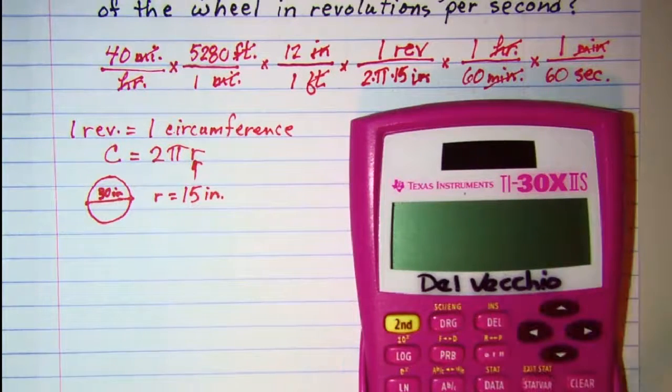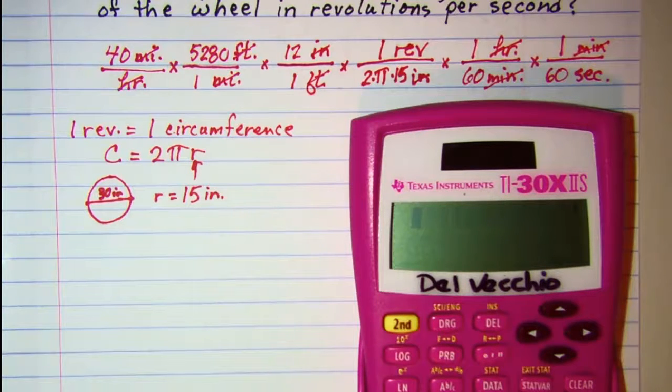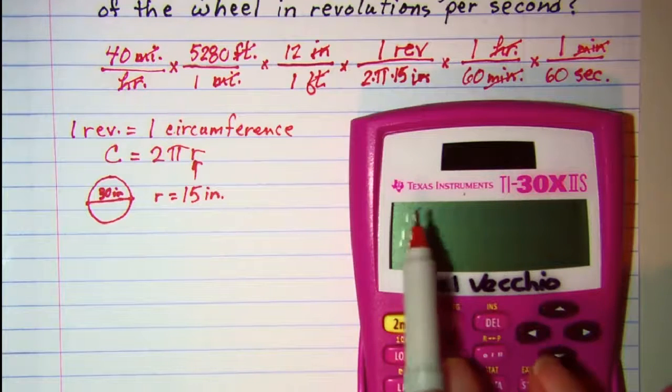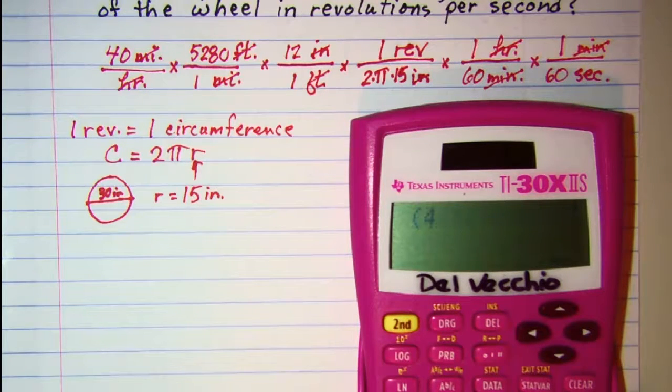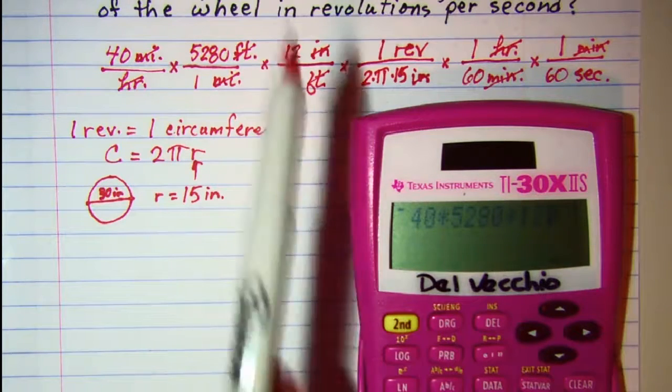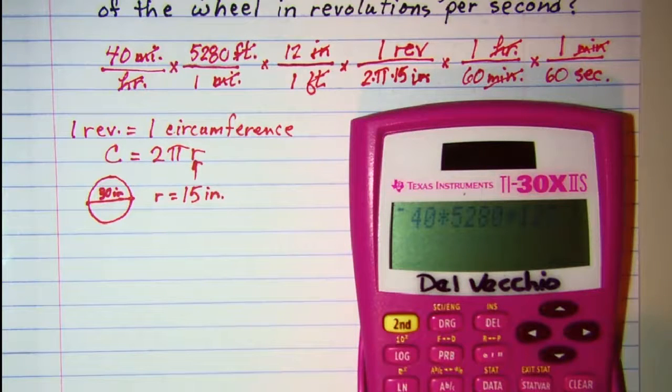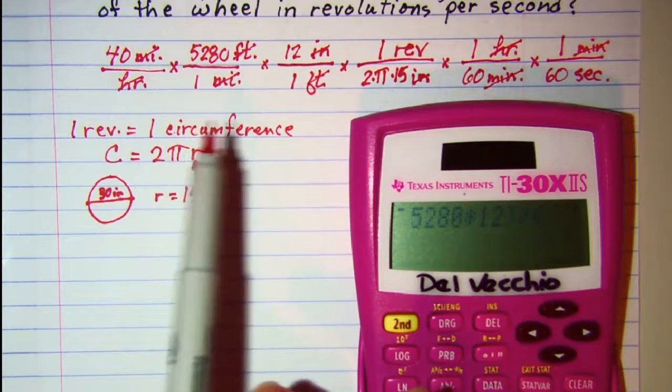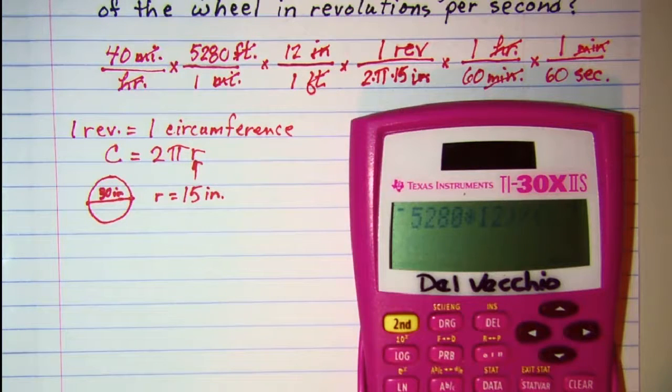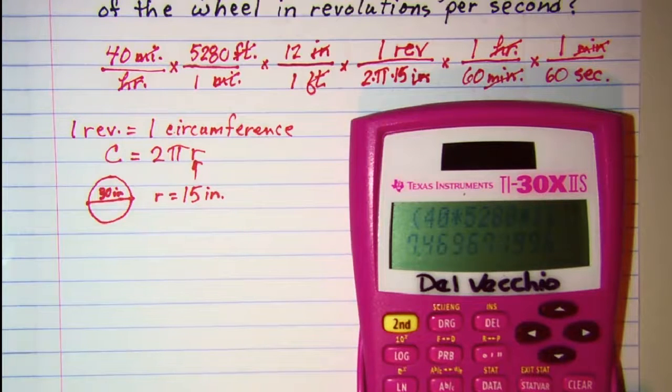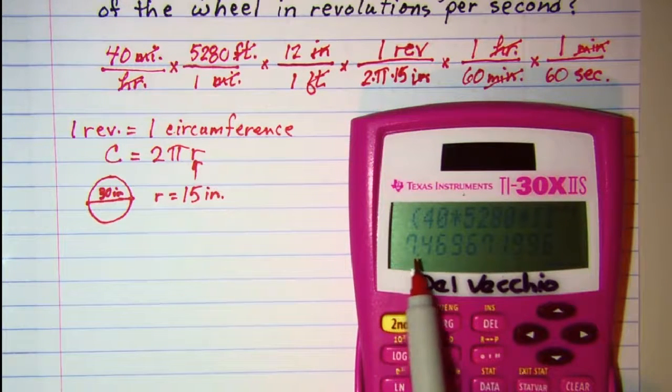Now if we do the math here, we have 40 times 5280, and we go ahead and open the numerator with parentheses. So 40 times 5280, and then times 12, and the rest are 1's, so that's all of the numerator. And then divided by, and then open the denominator. I have 2 times pi times 15 times 60 times 60. Close my denominator up and hit equal, and so it looks like it's about 7.47.